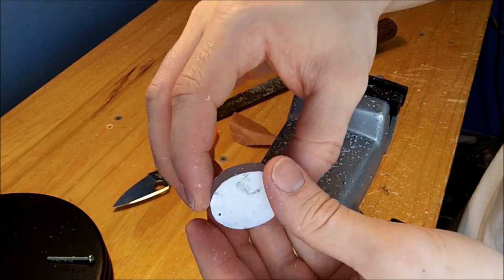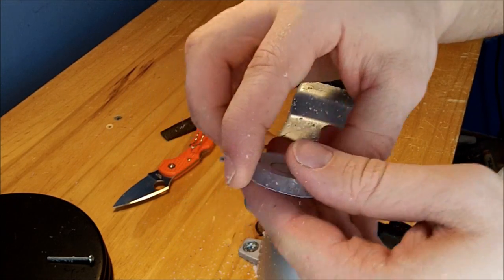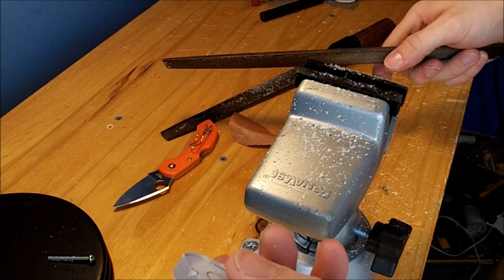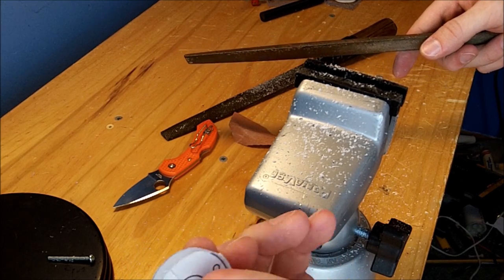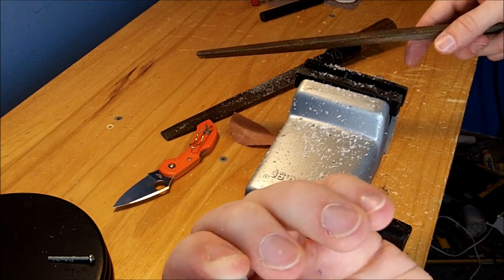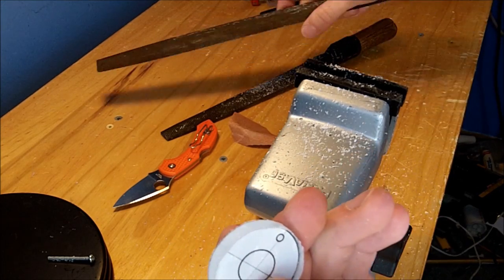And check your progress. You should have a nearly circular part right now. Using the file, simply go over the perimeter once or twice to remove any of the burrs or tool marks. And we'll test fit it now.